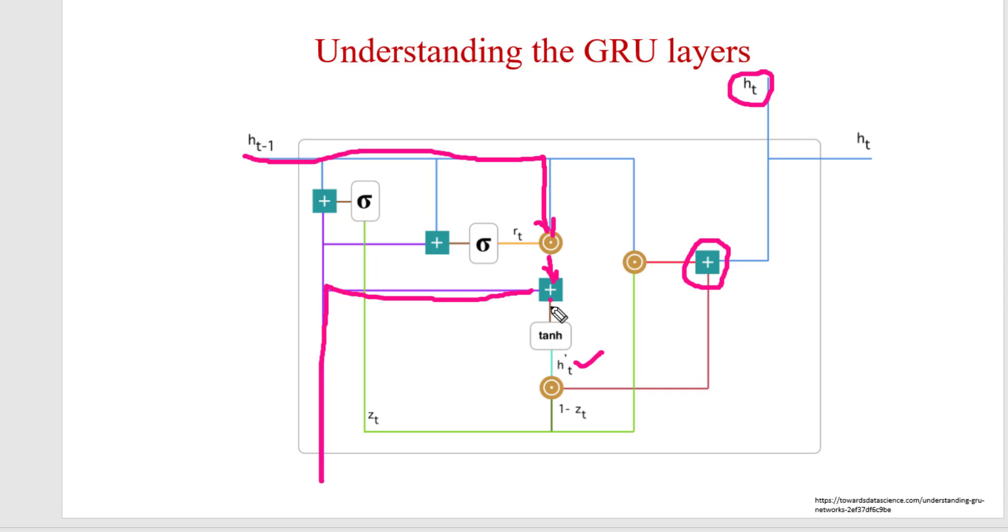After that we are applying tanh activation function to it which will provide us h t dash. So h t dash is the actual calculation of this time stamp. But whether this time stamp's value is important, that will be decided by the z t value. So if z t value is 0, then 1 minus z t will be 1, so it is indicating that this information is at most important and we need to forward this as it is.